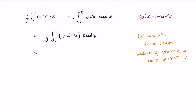This means we have negative 1 over 8 times the integral from 0 to 0 of 1 minus w squared dw. Since the upper and lower limits are both 0, this integral equals 0. So integral d equals 0.